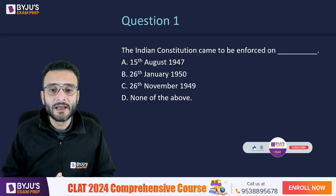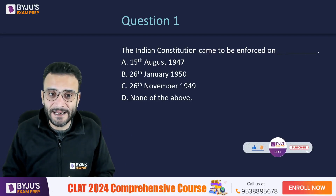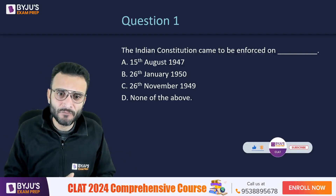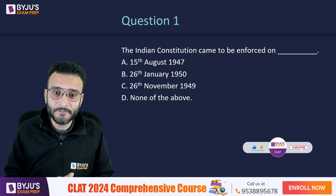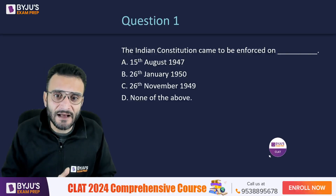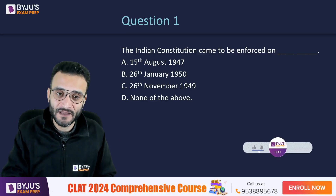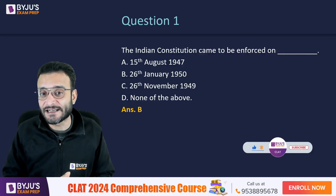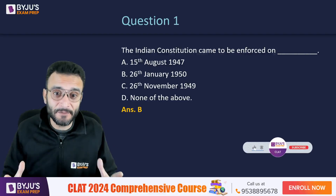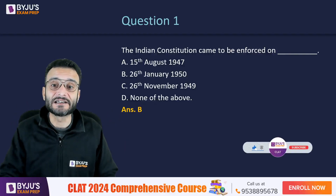The first question: the Indian Constitution came to be enforced on which of the following dates? 15th August 1947 — that is Independence Day; 26th January 1950; 26th November 1949; or none of the above? The correct answer is 26th January 1950. The Republic Day was the day on which our constitution came to be legally enforced.